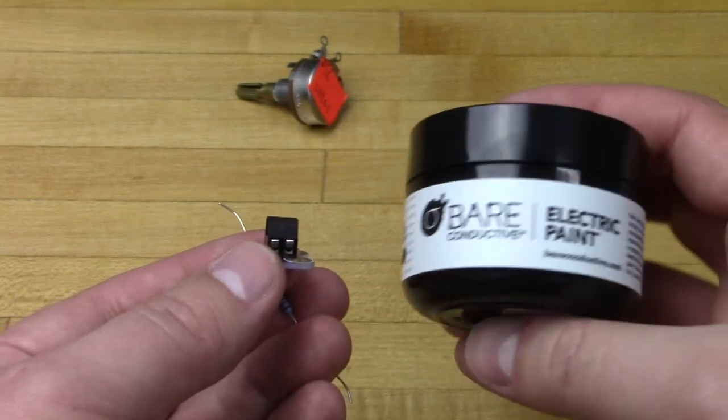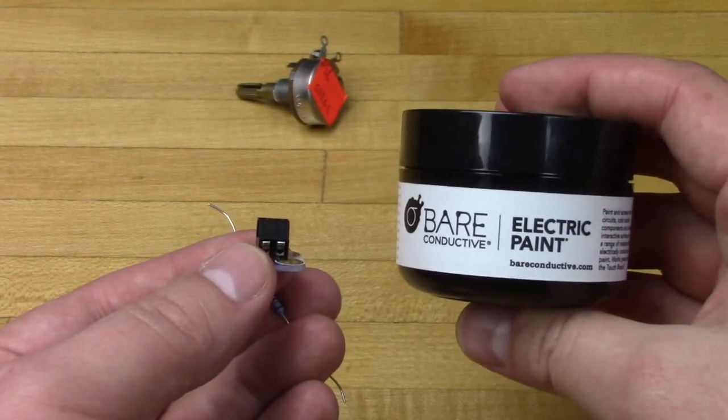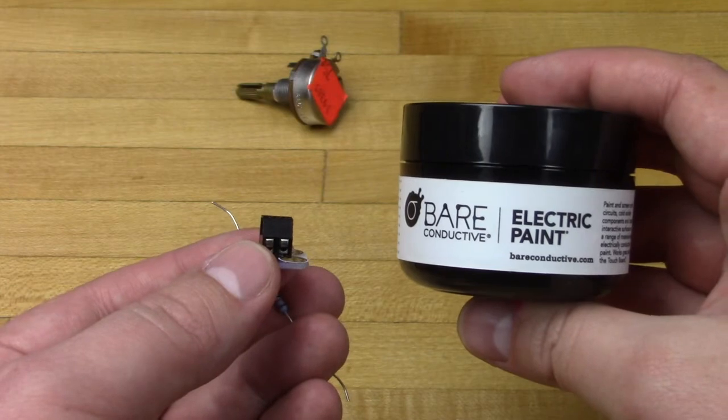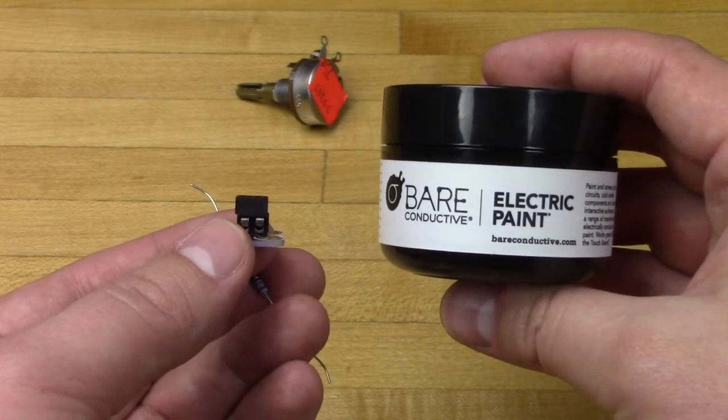For the variable part we'll be using some bare conductive paint. Bare conductive paint is a graphite based paint, and the nice part about it is the longer you make your line of paint, the more resistance you'll get. So this works perfect for an interactive variable resistor project, such as the one we're doing here.